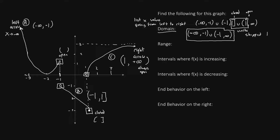Now for the range. To find the range, we list the y values, starting at the bottom and working our way to the top. Let's start at the bottom piece where this closed circle is — the y value in that position is negative 3. The end of this piece is an open circle with y value of negative 1. So we can begin by saying the range goes from negative 3 to negative 1. Since negative 1 is open, we use parentheses, but negative 3 is closed, so we use a square bracket.